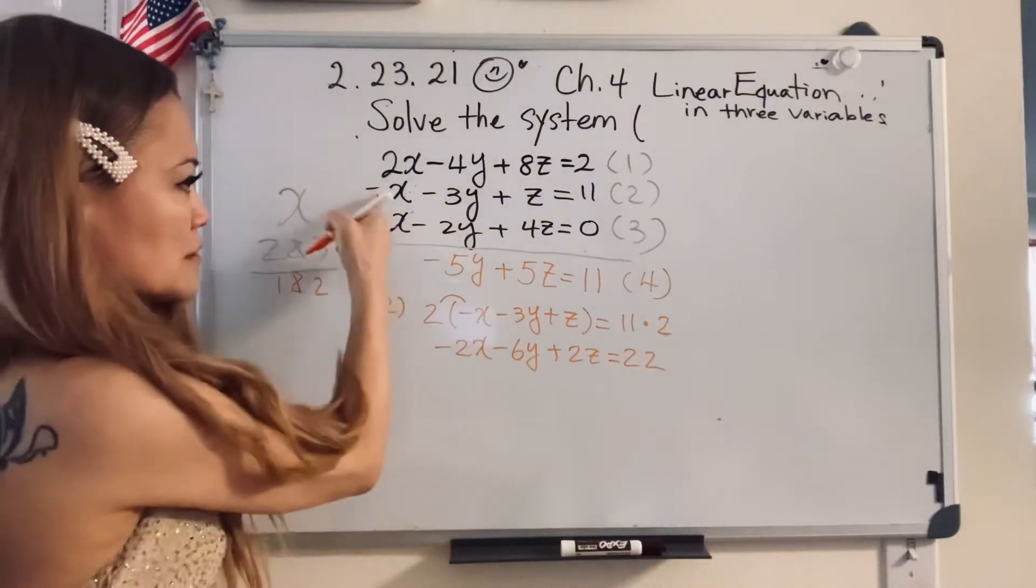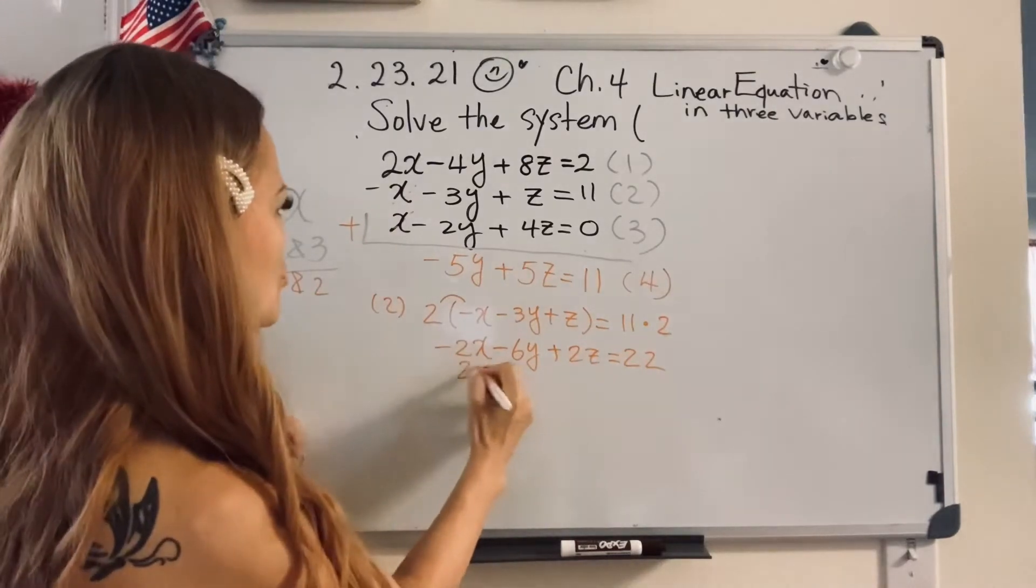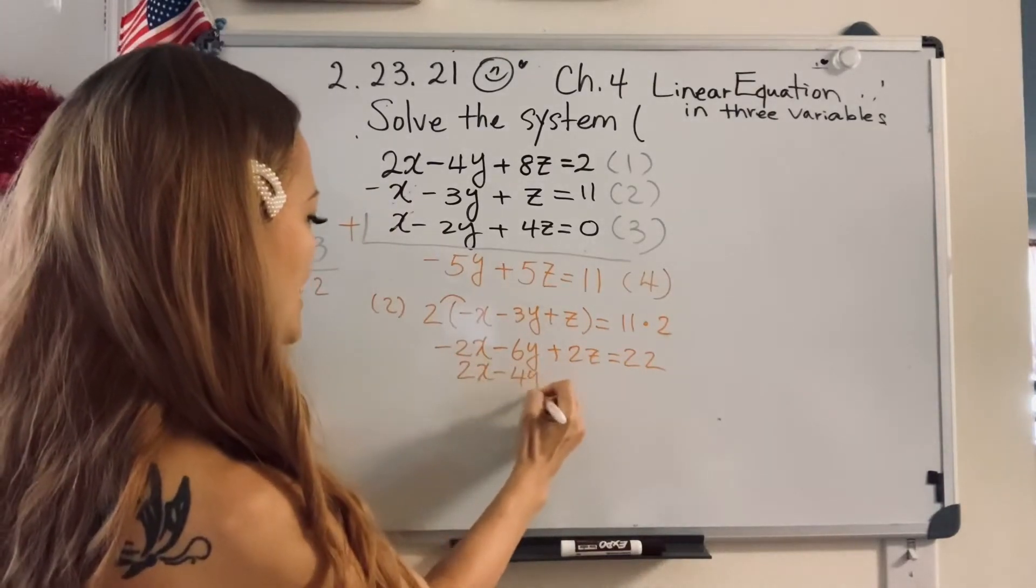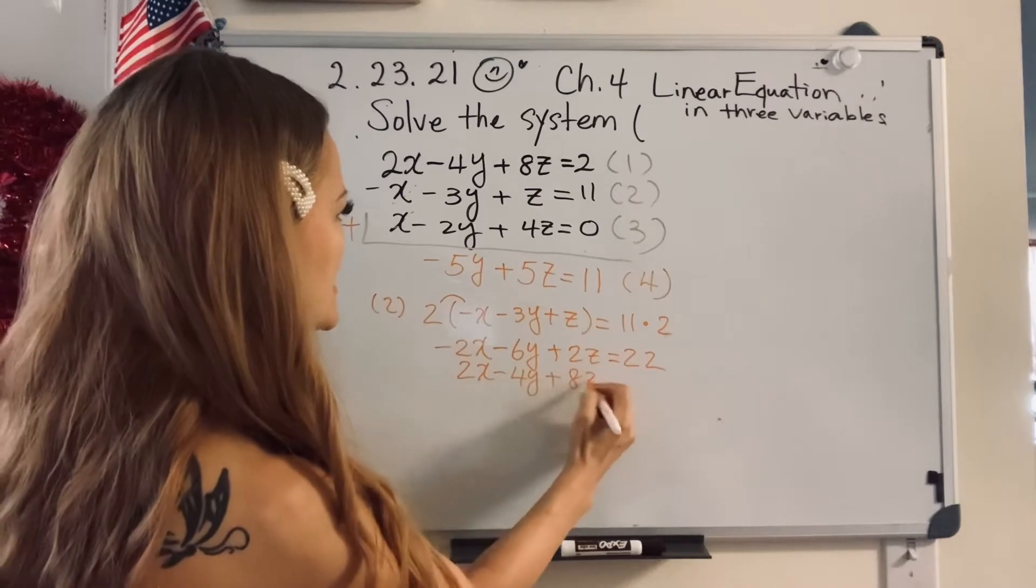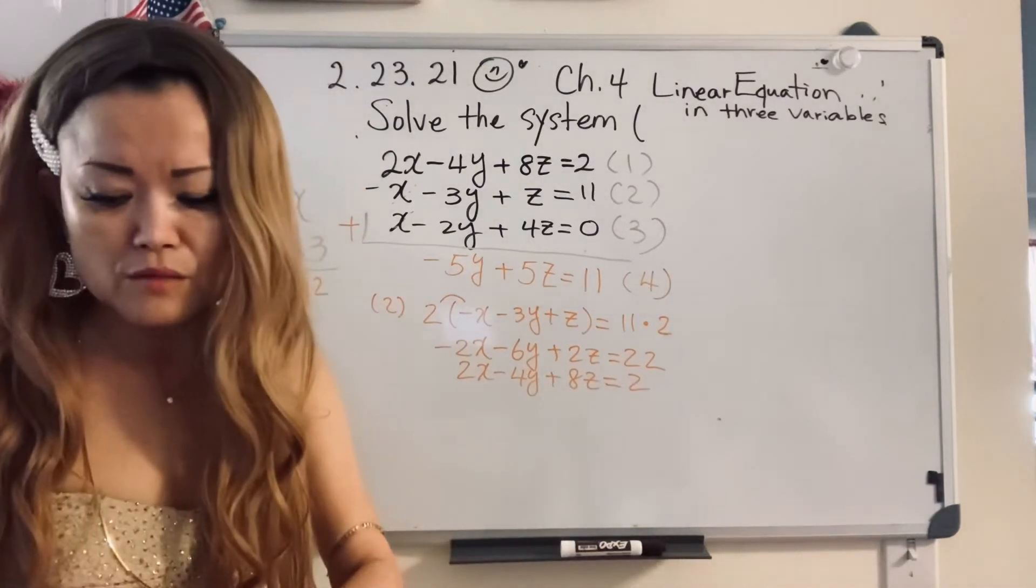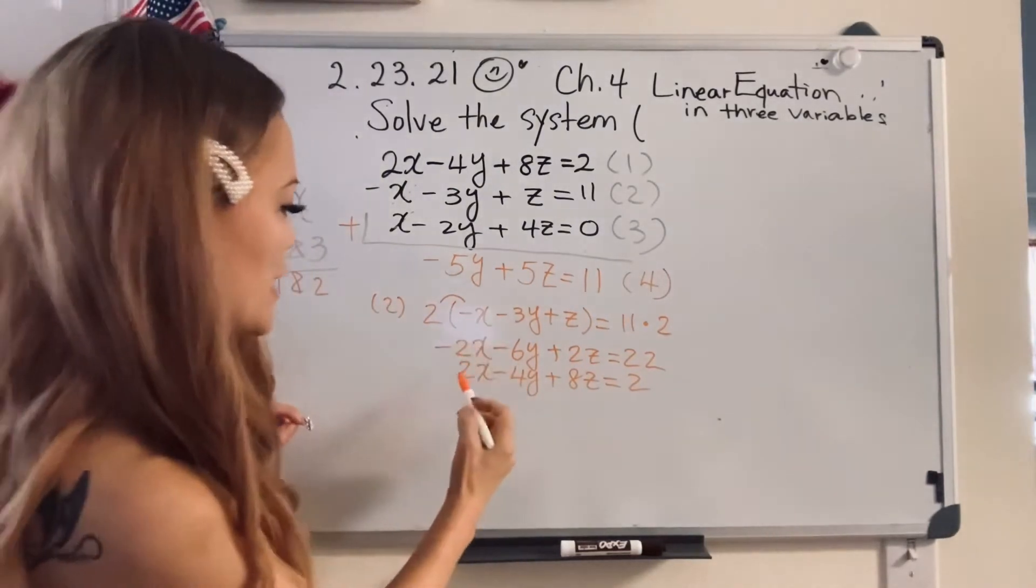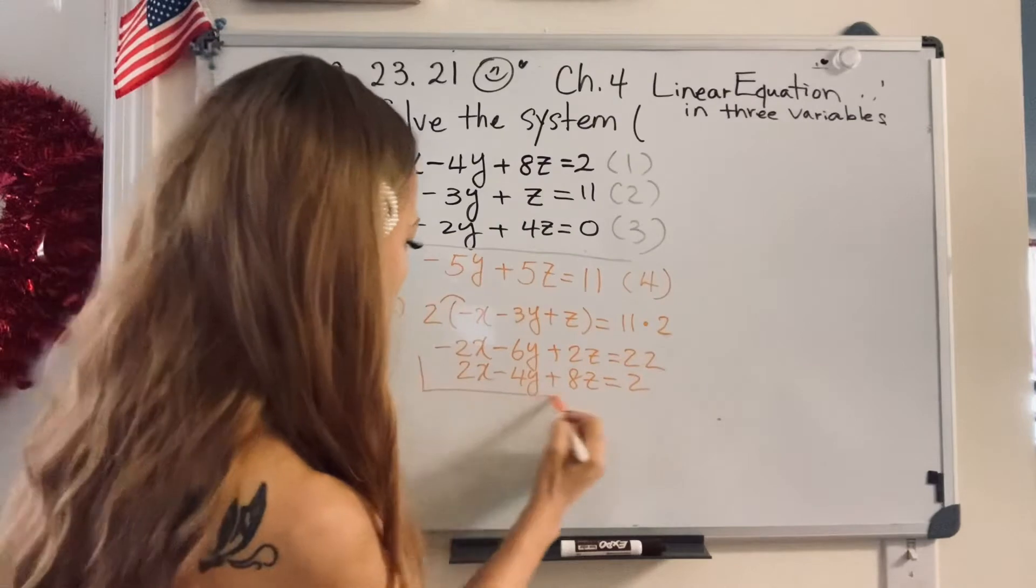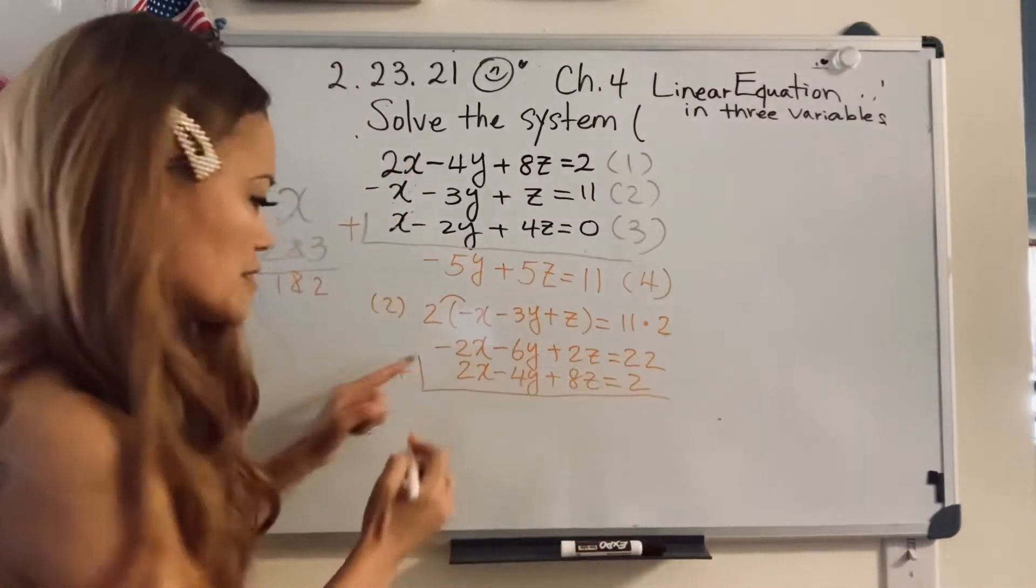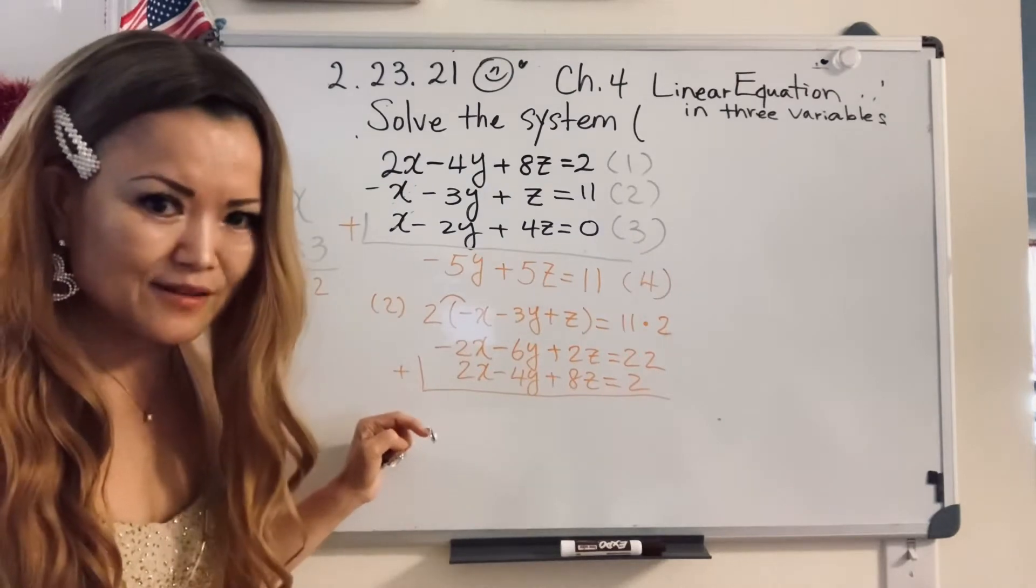Now let's do number one. Let's write down here. Two x minus four y plus eight z equal two. Follow me? I gotta make sure correct. All right. Let's add. Because different signs, same number, and same variable, we can eliminate it.